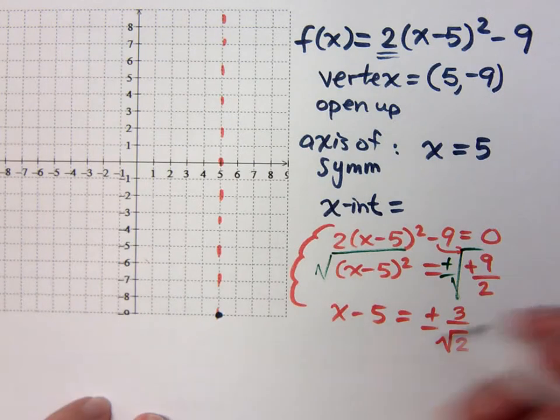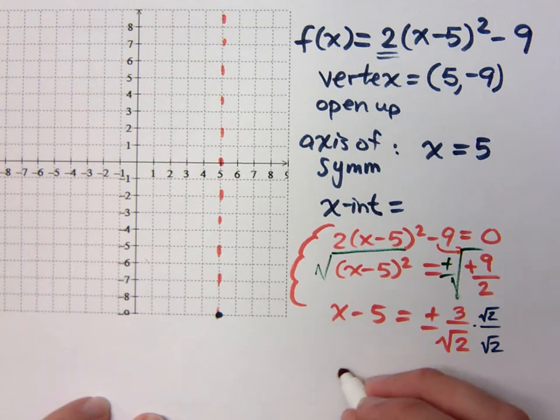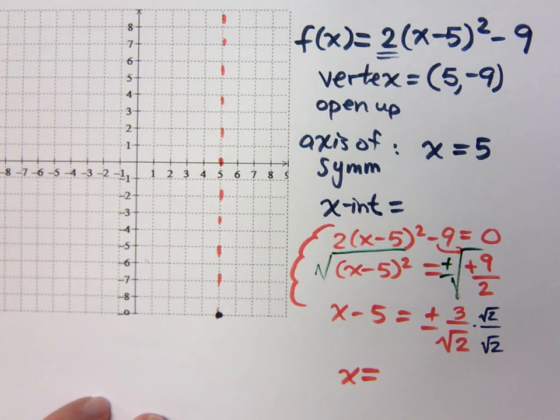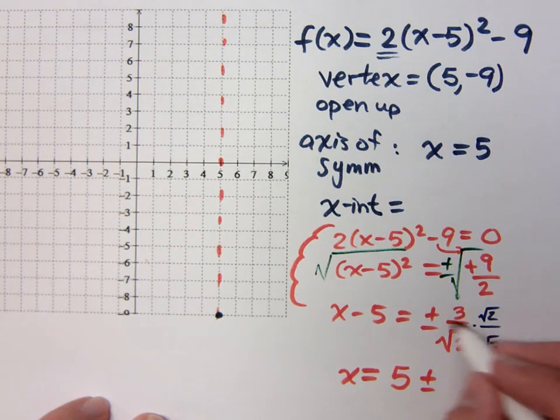But if you remember back in the day, we would rationalize this denominator by multiplying top and bottom times the square root of 2. It's not going to be exact. I require you to be exact. So when I move the 5 over, it's positive 5, plus or minus.